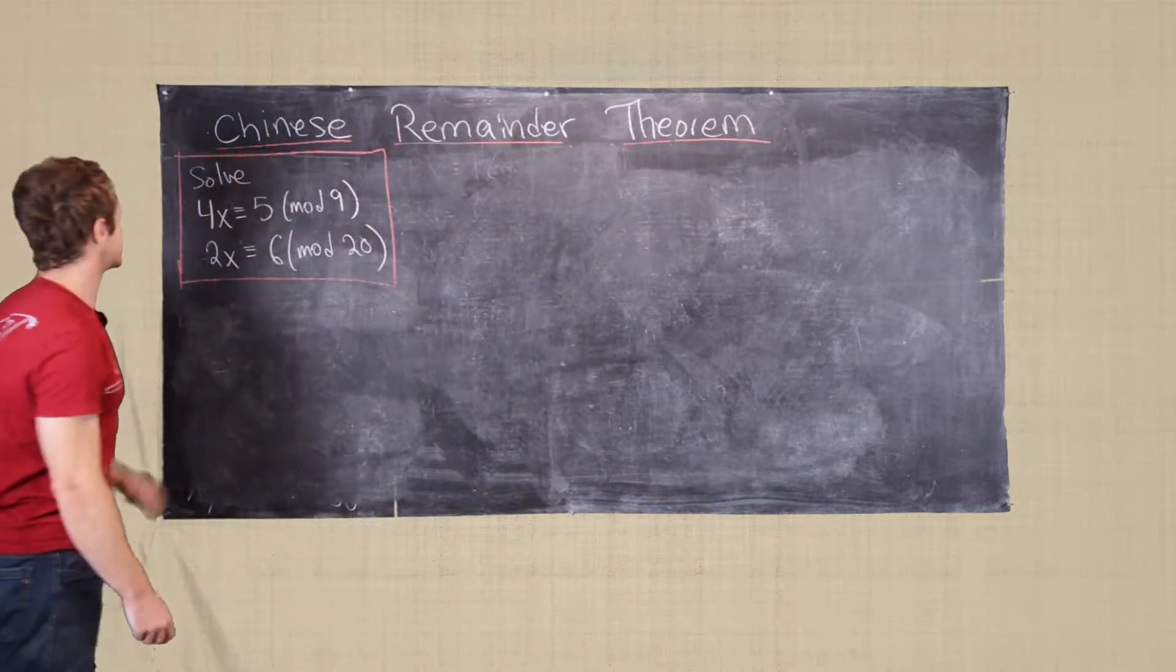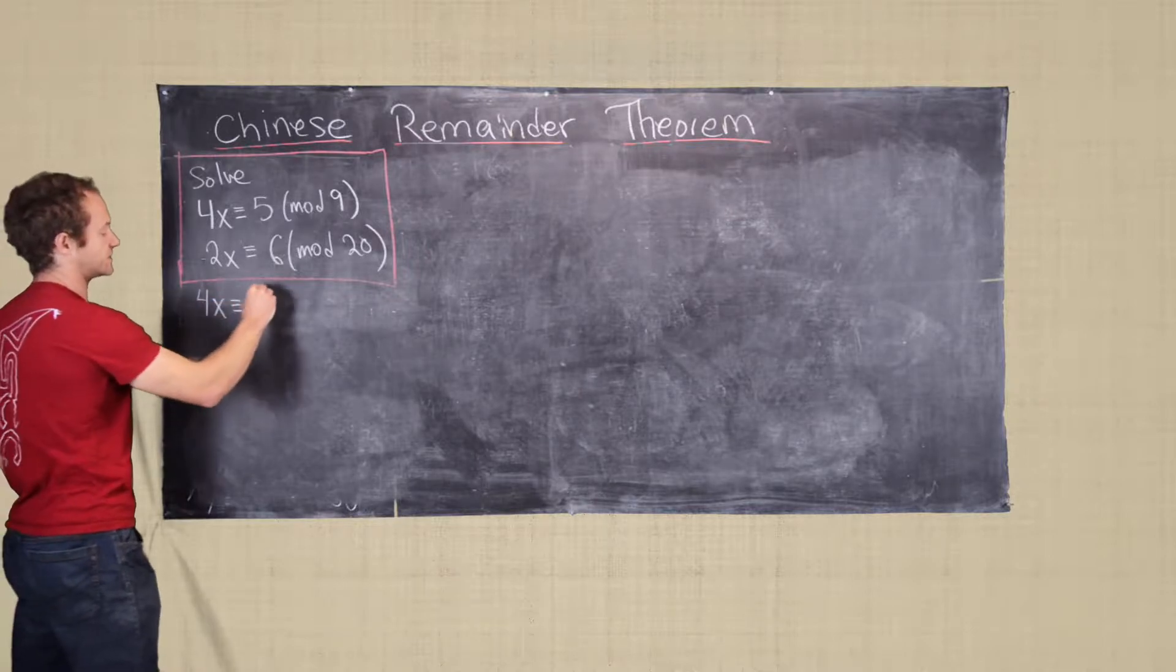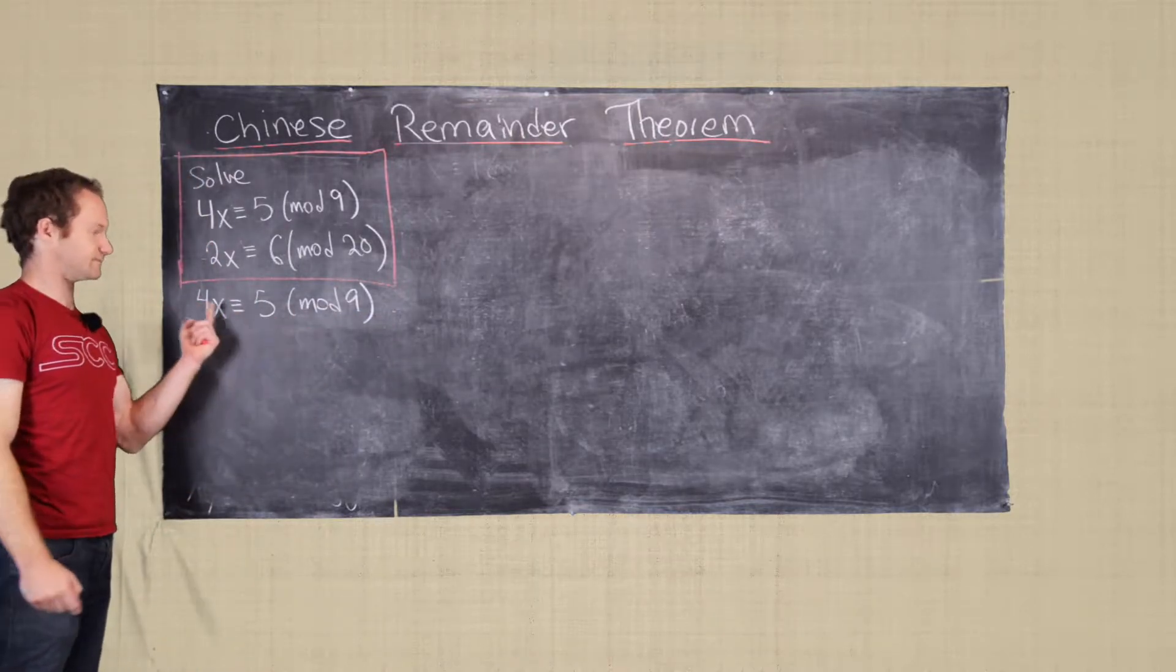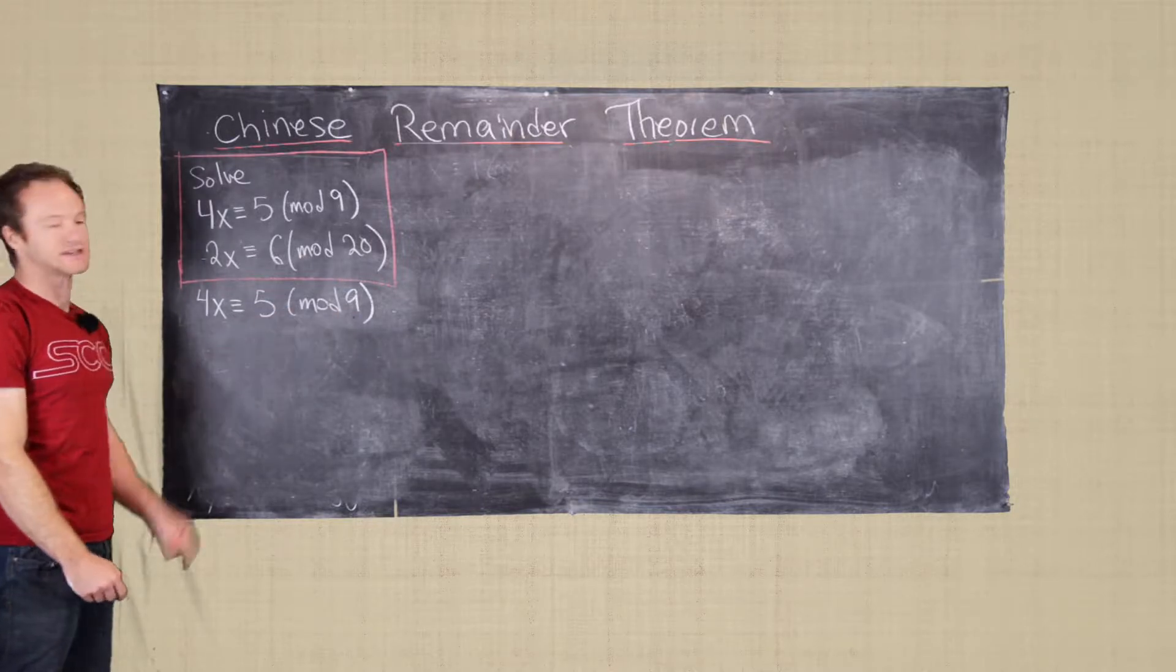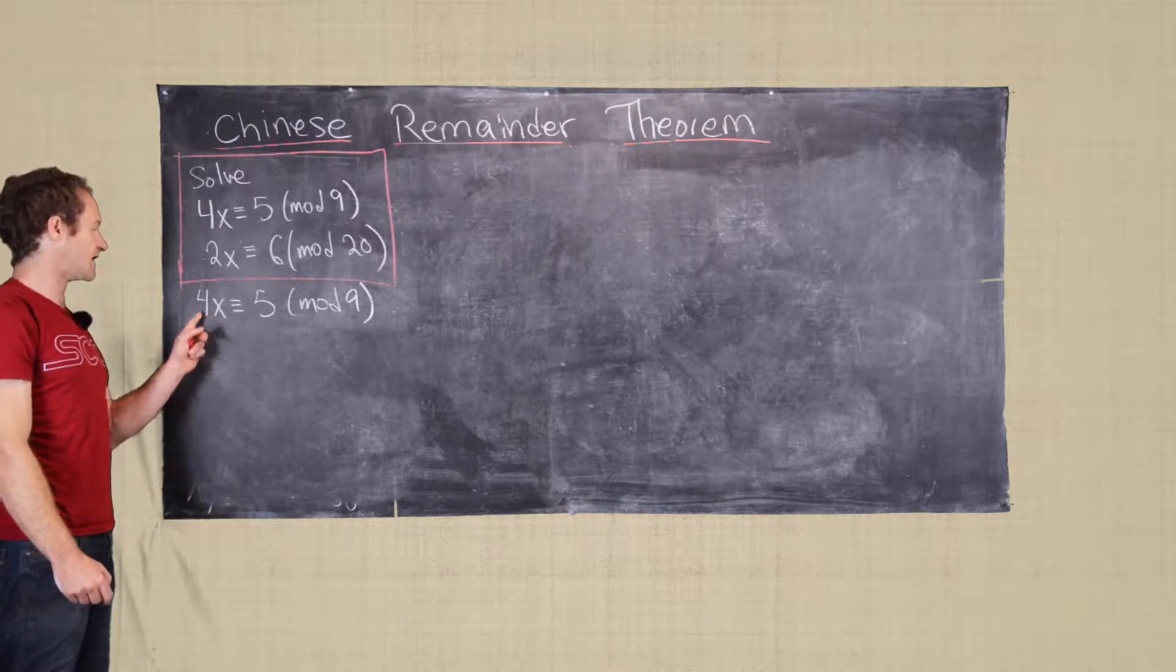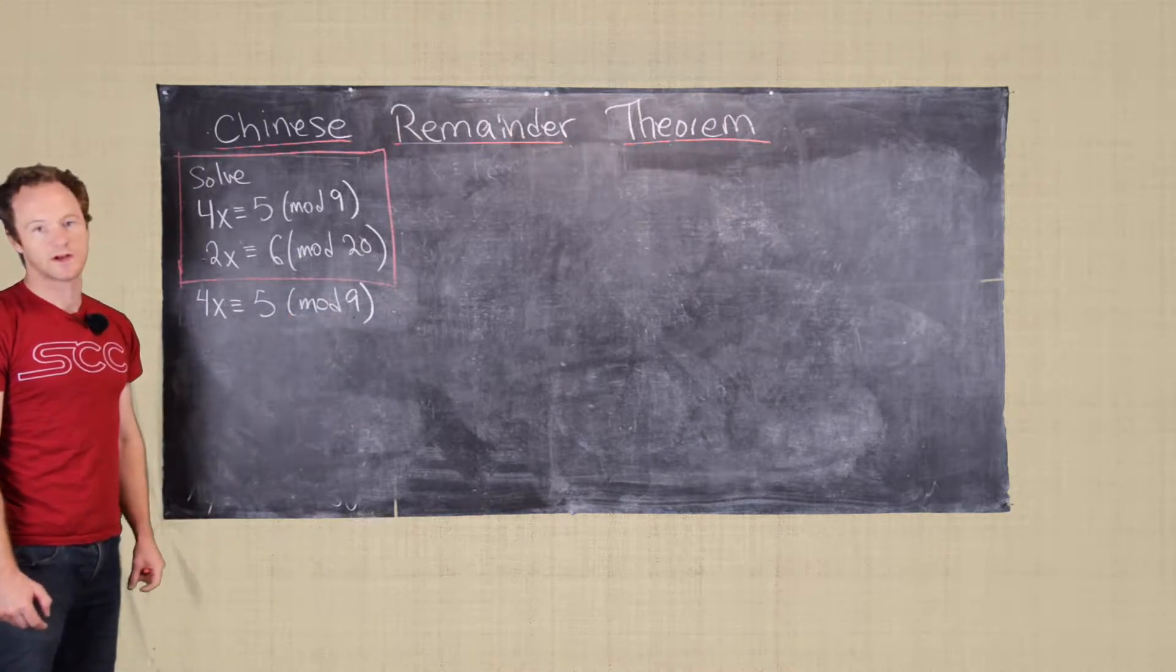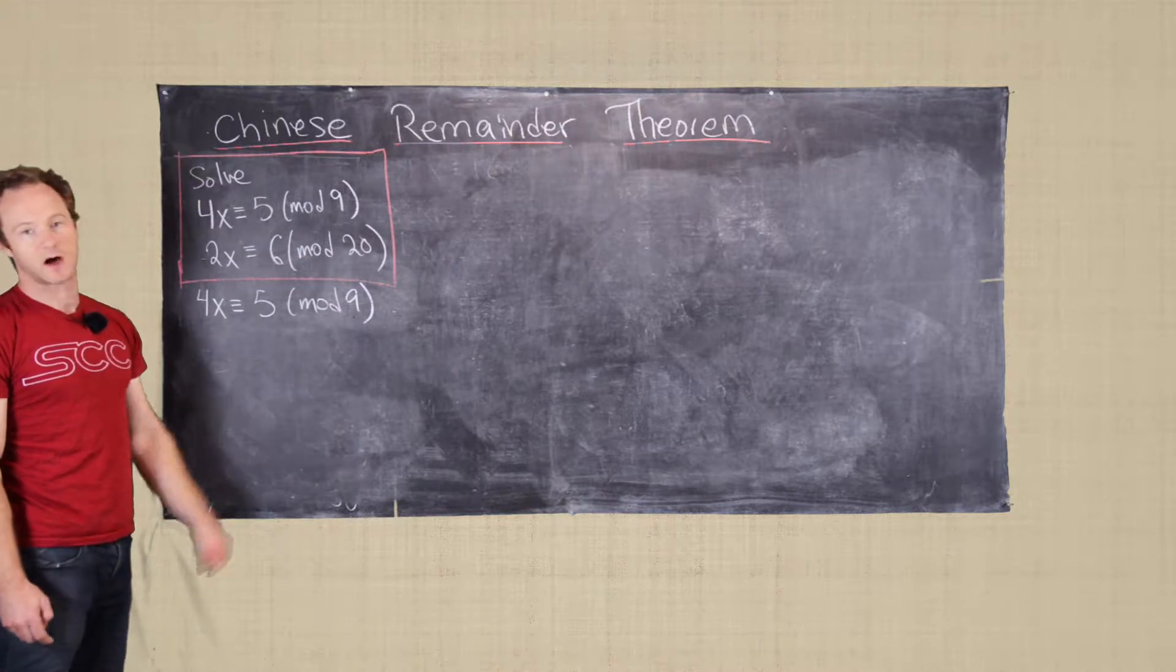Let's get started. So we first notice that we need to solve 4x is congruent to 5 mod 9. Now luckily 4 is relatively prime to 9, which means this has a unique solution, and we can get that unique solution by multiplying both sides by the multiplicative inverse of 4 mod 9. Now we notice that 4 times 7 is equal to 28, and 28 is 1 mod 9, so that means 4 inverse is equal to 7 mod 9.